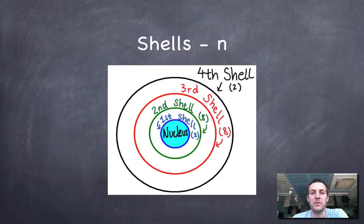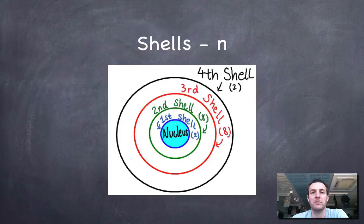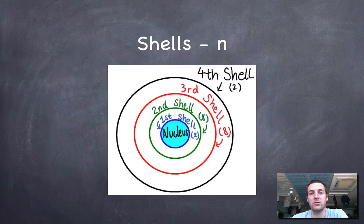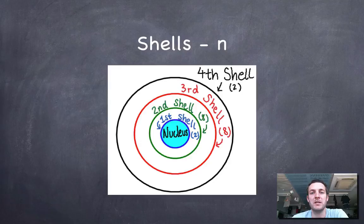First of all, something we already know quite a lot about is the fact that electrons are found in shells. We can describe what shell an electron is in by giving it its principal quantum number n. So if it's in the first shell, its principal quantum number is one; if it's in the second, it's two, and so on. But what we started to look at in the previous film was evidence for the fact that there might be some kind of more detail in where an electron is within a shell.